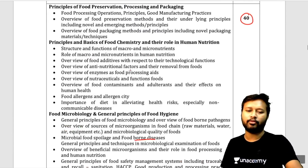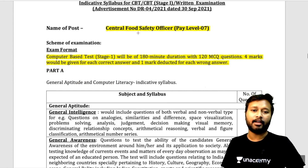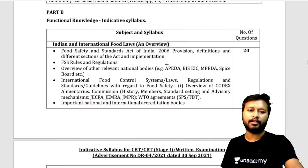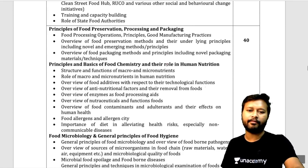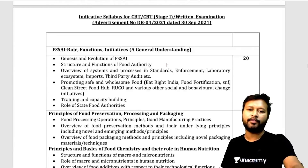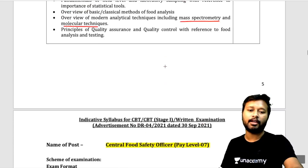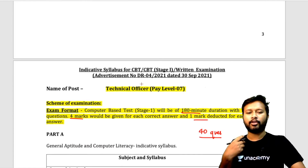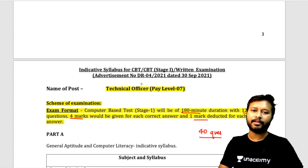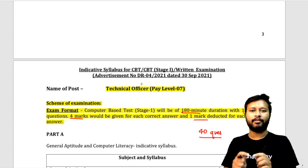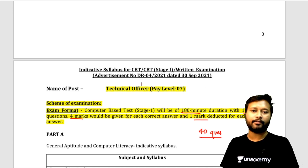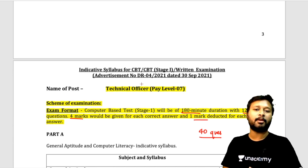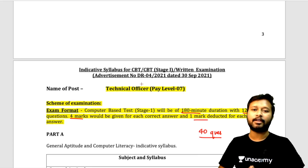Now, from where you have to prepare: there are specific books available. The Central Food Safety Officer post has a similar syllabus, so whether you appear for Technical Officer, Central Food Safety Officer, or both, the syllabus is the same. I'll be honest — I have personally not given this exam yet and have not appeared in it, so I won't be able to tell you exactly what type of questions are asked from personal experience.